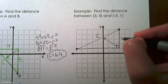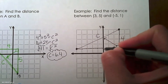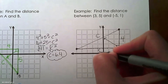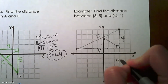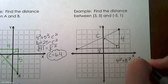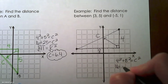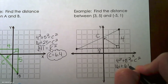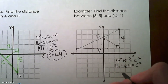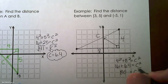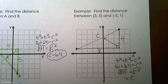Counting the vertical and horizontal segments: the vertical segment is 4 units and the horizontal segment is 8 units. Using the Pythagorean theorem: 4 squared plus 8 squared equals C squared. 4 squared is 16, 8 squared is 64, and 64 plus 16 gives us 80. Taking the square root of both sides, C equals 8.9. That is greater than both legs, so we have an accurate calculation.